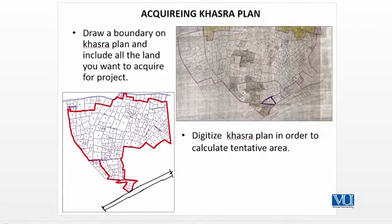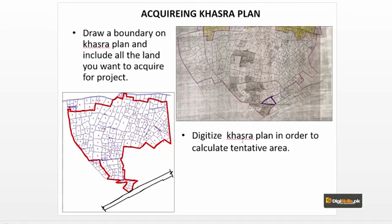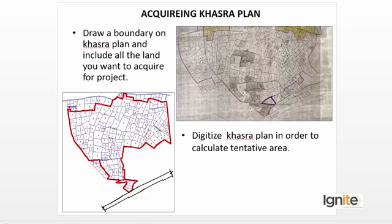Now let's see — when we get a plan, we will draw a boundary and then we will digitize it. Because this image shows where lines are located, we can draw the line as it is shown and then we can delete the original plan image and do our work.